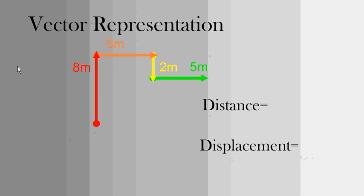There's two ways that we have you calculate distance and displacement. The first way is a vector representation. So here we have vectors drawn in two different dimensions. And the first step is 8 meters north, then 6 meters east, 2 meters south, and then 5 meters east. To calculate the distance for it, it's pretty simple. We just add up all the different vectors. So we get 8 plus 6 plus 2 plus 5 gets me 21 meters.